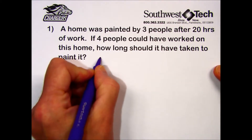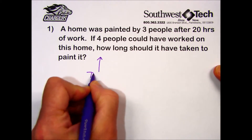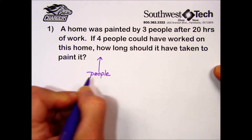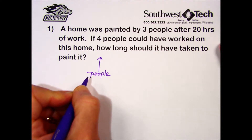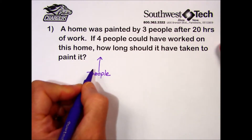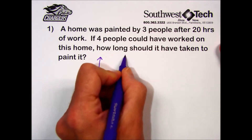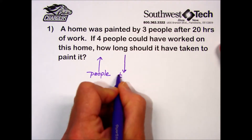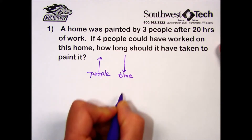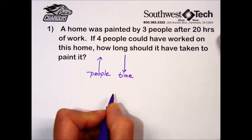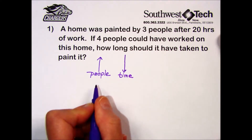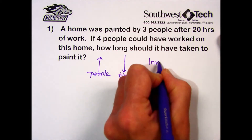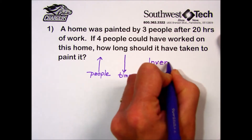If we look at what happens to the quantities, the number of people are increasing — we went from three to four. Experience should tell you that if we have more people working on a task, our time is going to decrease. When we have an increase in one quantity resulting in a decrease in the other, we have an inverse relationship.